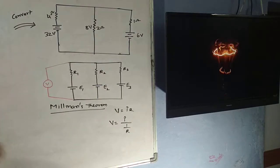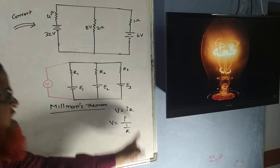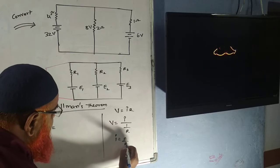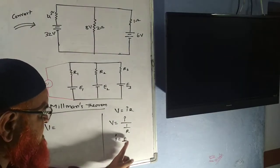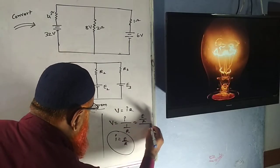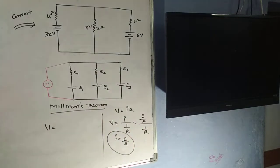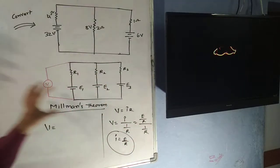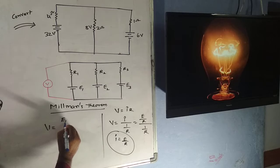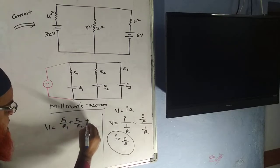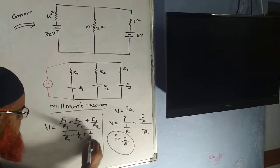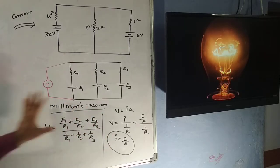If V equals IR, you can modify this formula. You can write I as 1/R — because it is going to become IR only — and after that I is equal to E/R. So this I in the numerator I am writing as E/R. The formula then becomes (E/R) divided by (1/R). With the help of this formula you can solve any complex circuit. Millman's theorem states: (E1/R1 + E2/R2 + E3/R3) divided by (1/R1 + 1/R2 + 1/R3). This is Millman's theorem, and by using this theorem you can solve any complex circuit.